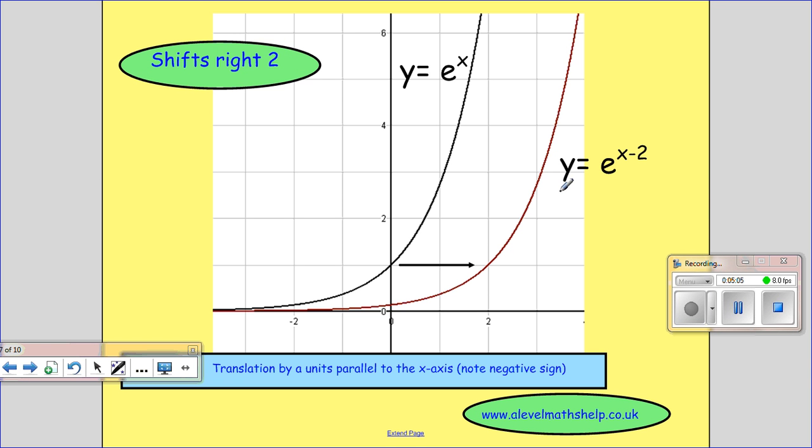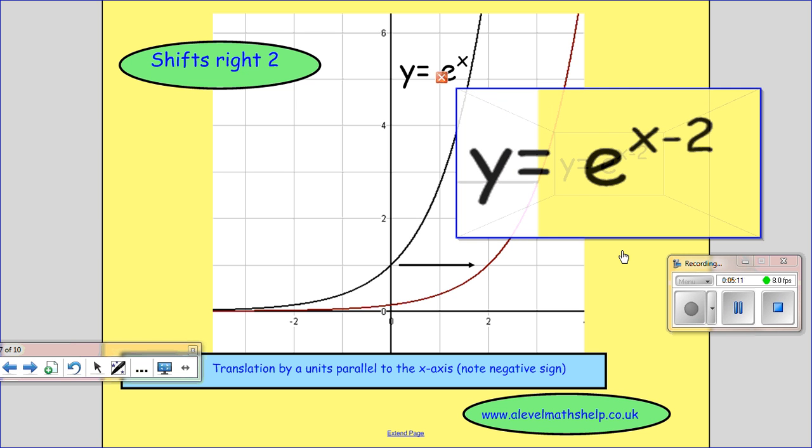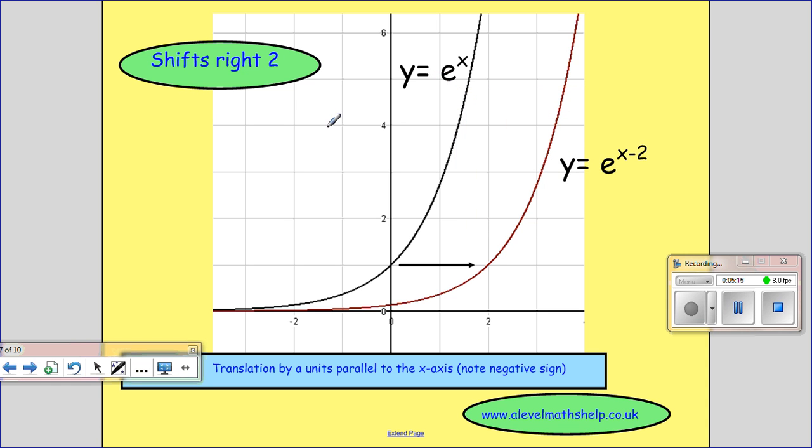This one, y equals e to the x minus 2. So we've talked about that one before. And that is a translation parallel to the x-axis. And because it's minus here, it means we go right. Because you just need more x's to get the same answer.